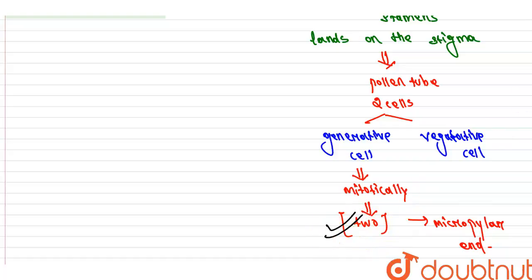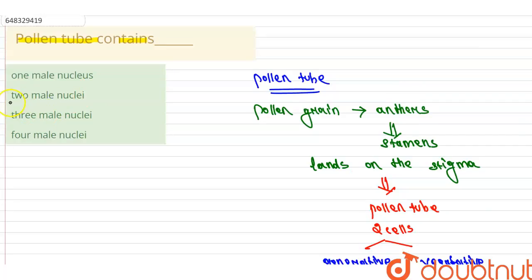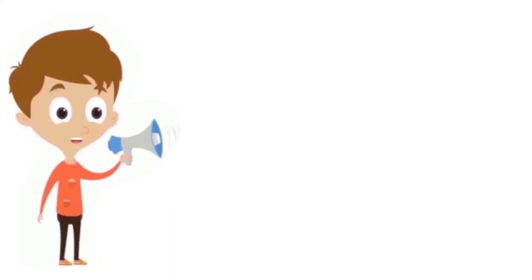So here we got our answer. This contains two nuclei. So the answer will be option two or option B, that is two male nuclei. All the other options are eliminated. I hope you understand the question and the answer. Thank you.